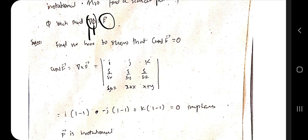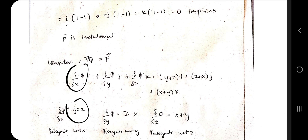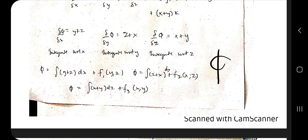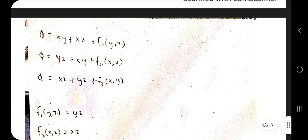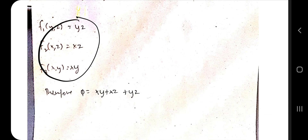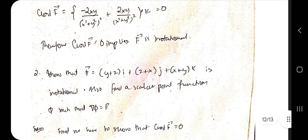For the scalar point function φ such that ∇φ = F, take f₁, f₂, f₃ terms and partially differentiate. Integrate each term — treating x with y and z as constants, y with x and z as constants, and z with x and y as constants — to get three expressions for φ. Combining the three equations gives the scalar potential φ = xy + xz + yz. That's all for Module 3 — thank you for watching.